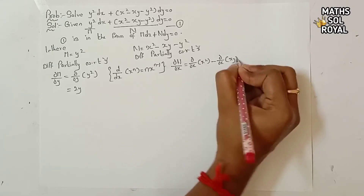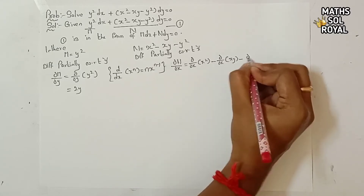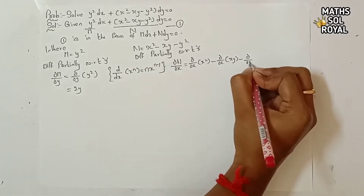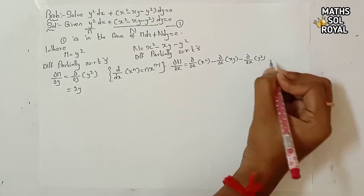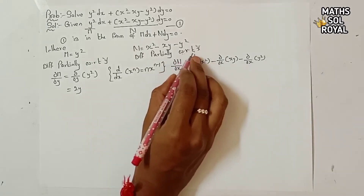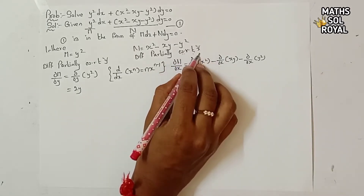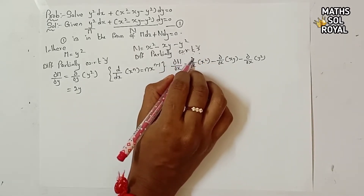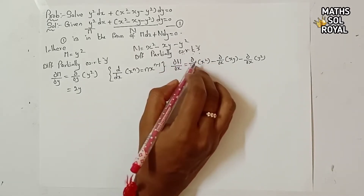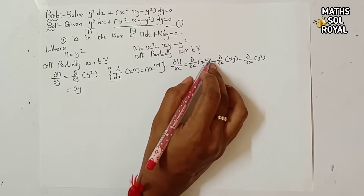∂N/∂x = ∂/∂x(x²) - ∂/∂x(xy) - ∂/∂x(y²). When differentiating with respect to x, only x terms are differentiated; other terms are treated as constants.